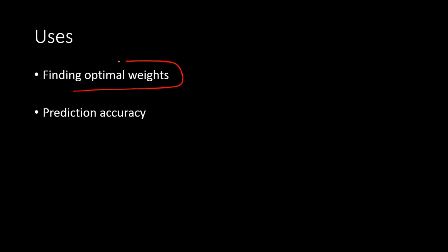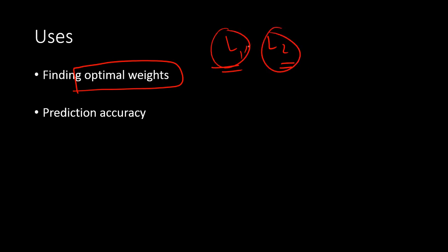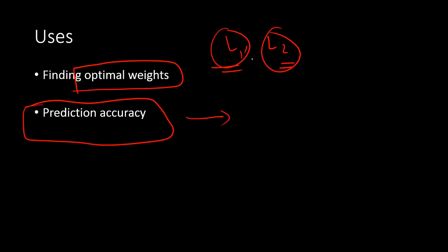Finding optimal weights using L1 and L2 is the biggest challenge. There are several techniques to find optimal weights, which will be covered in an upcoming example video using real data. Prediction accuracy is expected to improve with L1 and L2 regularization. Whether to use L1 or L2 depends on the situation — sometimes L1 performs better, sometimes L2. There is no fixed rule, so it is always good to try both and see which works better on your test data.